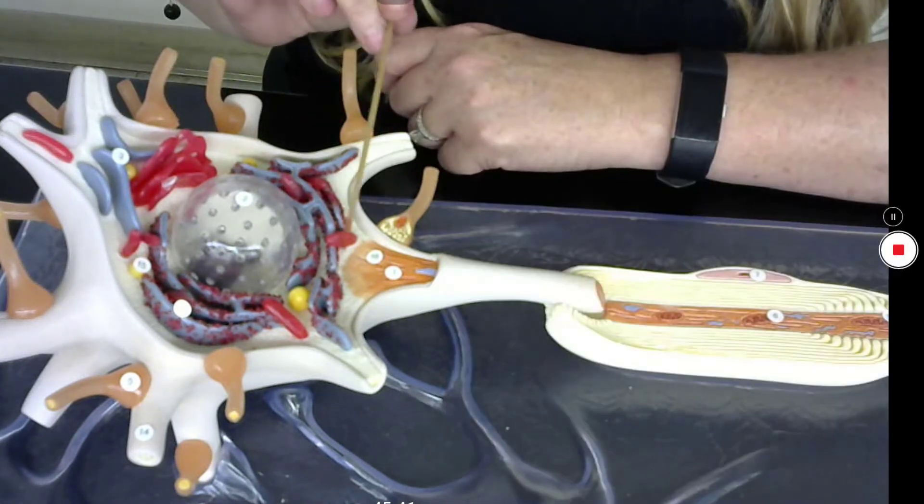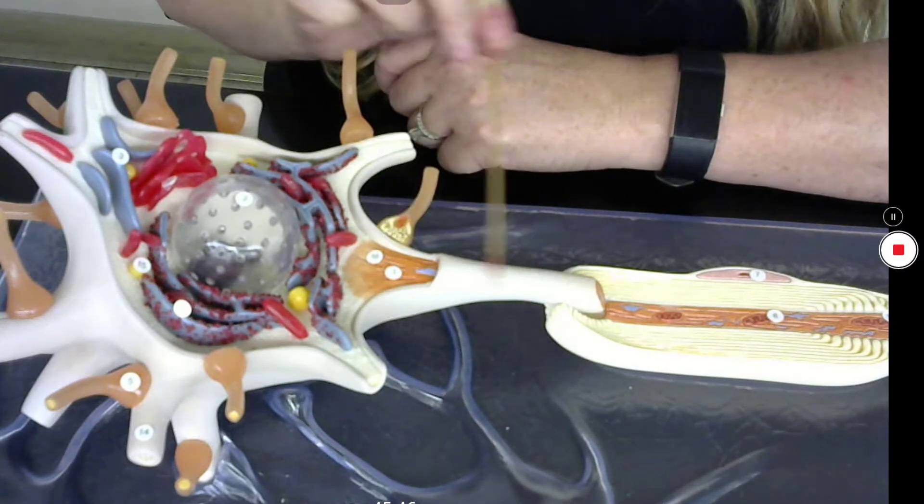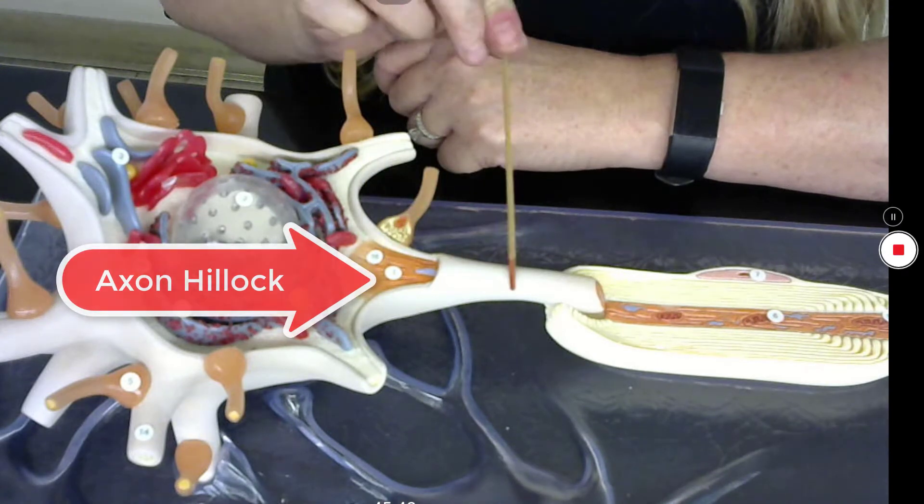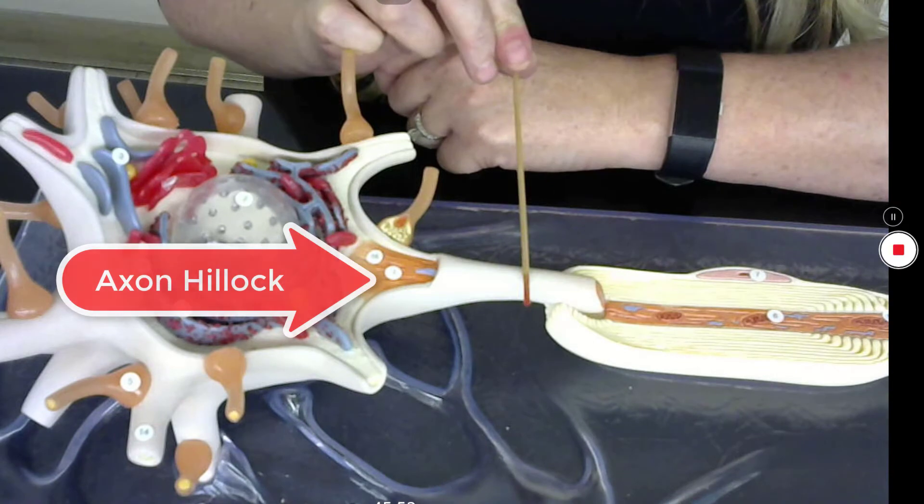As we get towards the axon here, this is going to taper off. This initial segment here is the axon hillock. This is the structure that initiates the action potential.